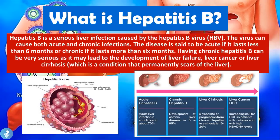Hepatitis B is a serious liver infection caused by the Hepatitis B virus, commonly known as HBV. The virus can cause both acute and chronic infections. The disease is said to be acute if it lasts less than six months, and chronic if it lasts more than six months. Chronic Hepatitis B can be very serious, potentially leading to liver failure, liver cancer, or liver cirrhosis — a condition that permanently scars the liver.